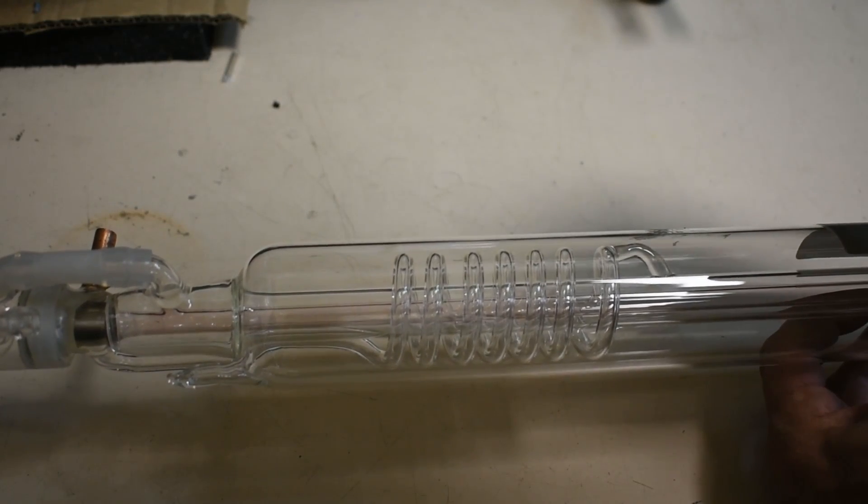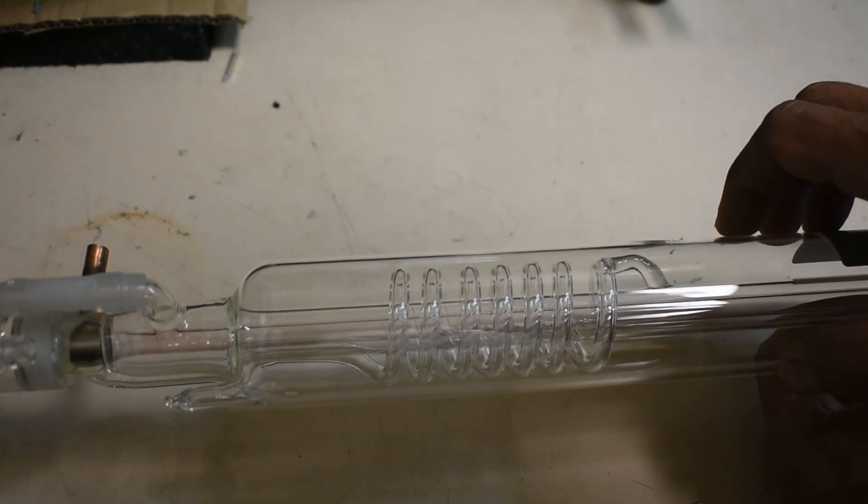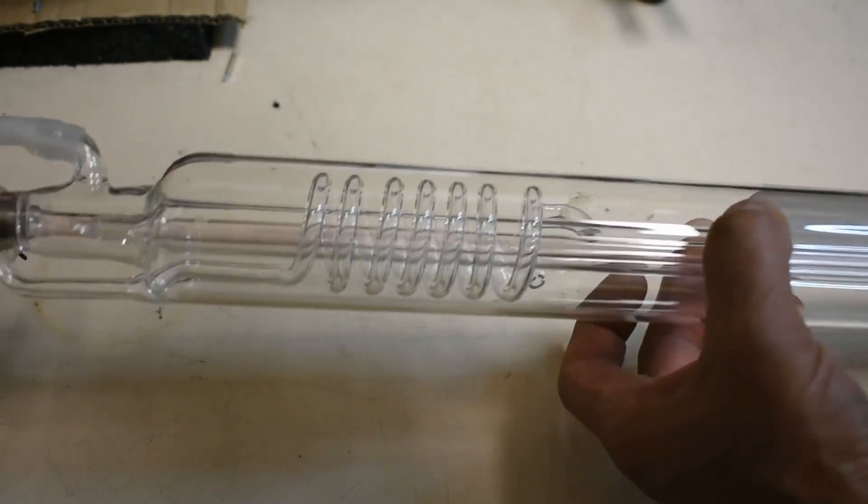And interestingly, it's called a carbon dioxide laser but the carbon dioxide is actually probably one of the rarer gases that are in there. It's nitrogen and helium is also in there.